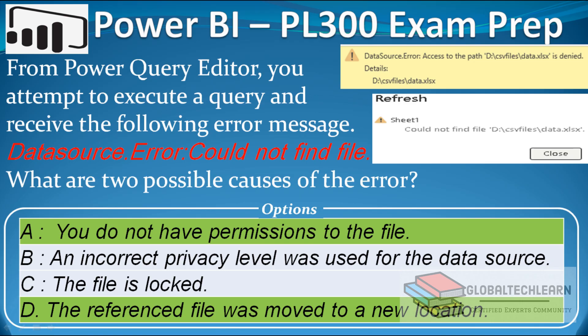Now let's go back to our question and confirm the answers. Option A — 'You do not have permission to the file' — is correct when the user logged into Power BI doesn't have access to the source file. Option D — 'The referenced file was moved to a new location' — is correct when the file is not available at the original location. These are the two correct answers.